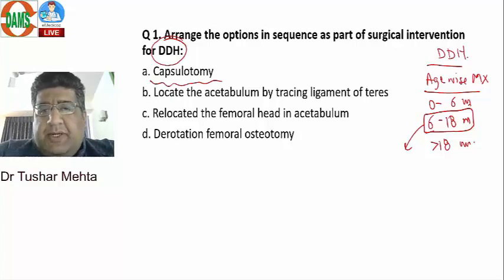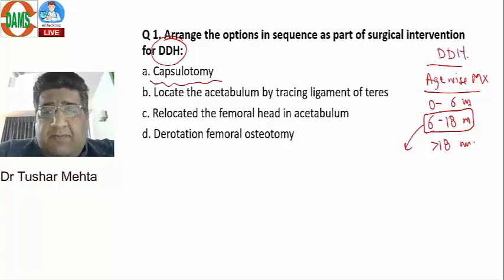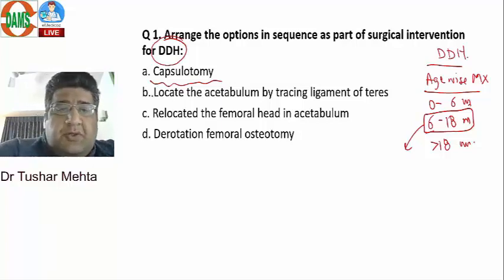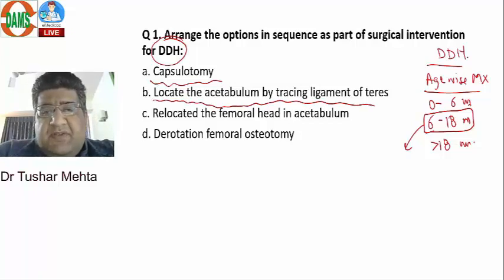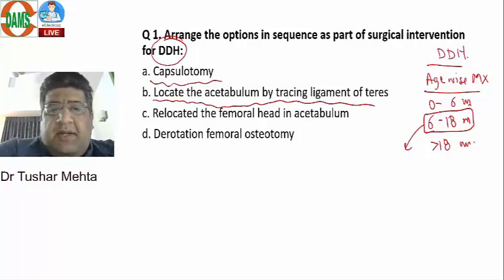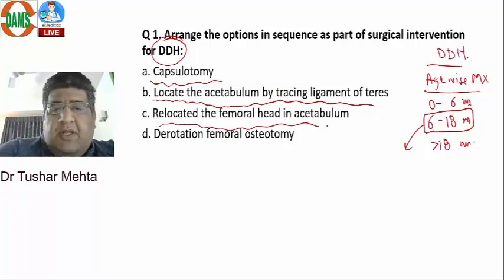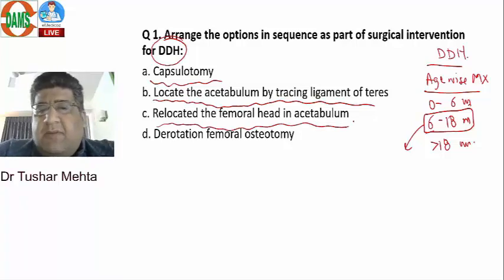You have to locate the head and the acetabulum because they are dislocated. You locate them by tracing the ligament connecting both structures — the ligamentum teres. Then you put the head back into the acetabulum.